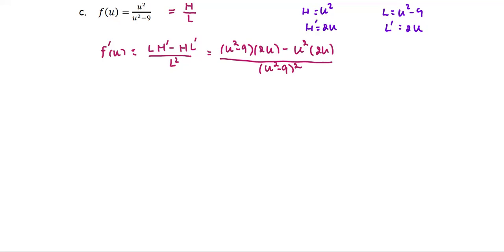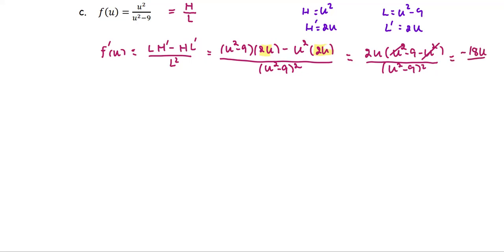So we're going to simplify the numerator. We see the common factor 2u, which we factor out. Then we have u squared minus 9 minus u squared, divided by the quantity u squared minus 9 squared. u squared minus u squared cancel out. Therefore, we have negative 18 times u over the quantity u squared minus 9 squared, as the first derivative of this function.